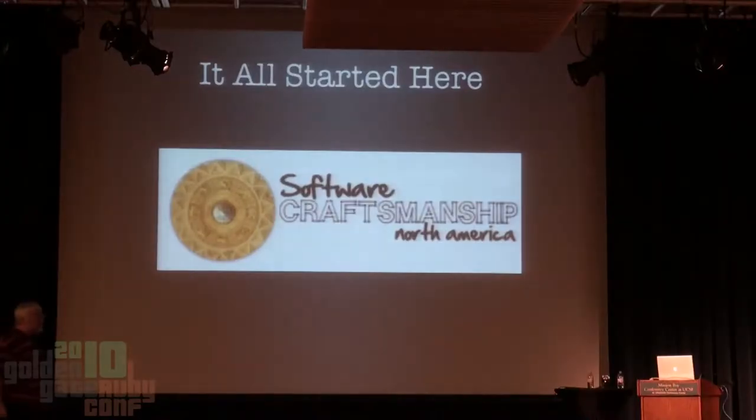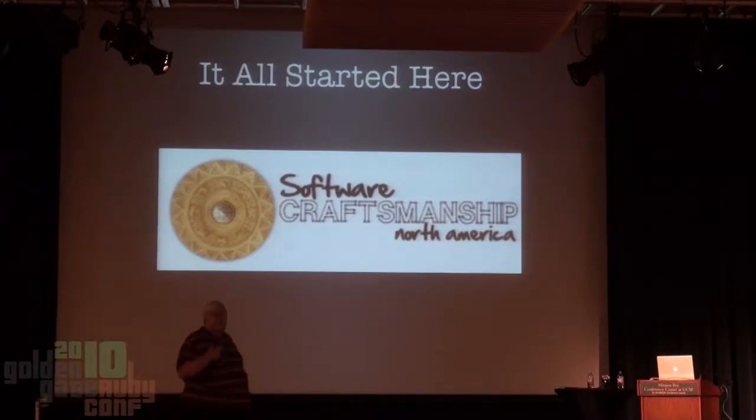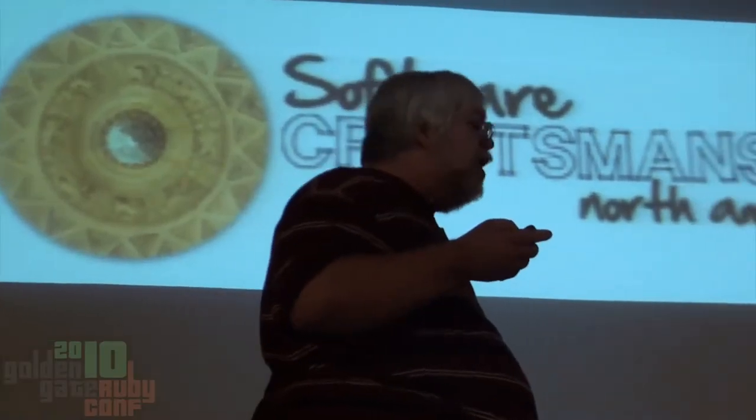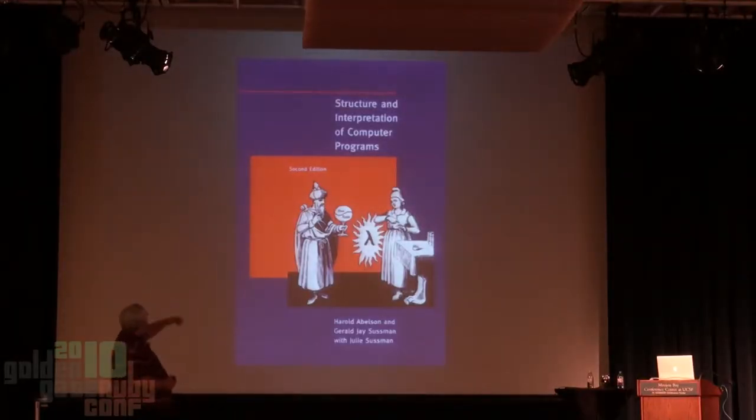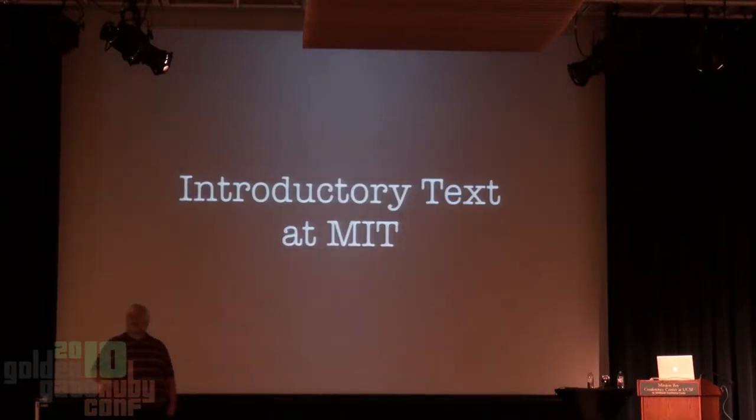We'll get to the meat of my talk. It all started last summer at the Software Craftsmanship Conference in Chicago. Something I call the rule of three happened—when I hear something mentioned three times in quick succession, that means it's probably something I should look at. During that conference, I heard Bob Martin of Object Mentor mention 'Structure and Interpretation of Computer Programs,' an MIT introductory text. I heard Michael Feathers mention the same text, and a third person as well. So three times in quick succession I heard this book mentioned. It's called The Wizard Book, and this is an introductory text used at MIT for beginning programmers.